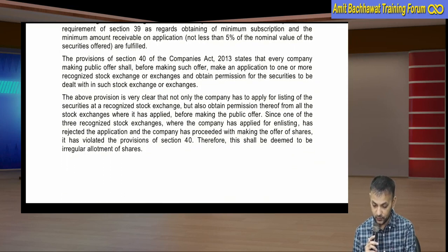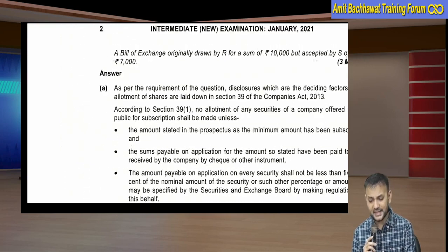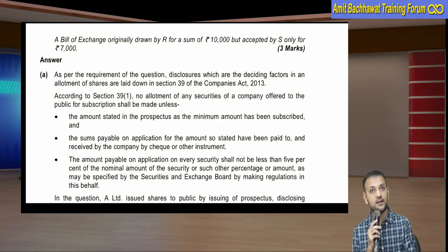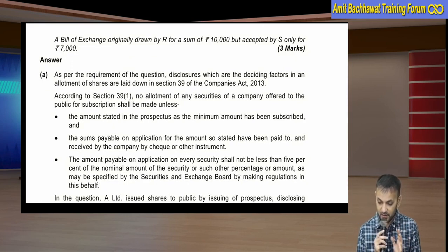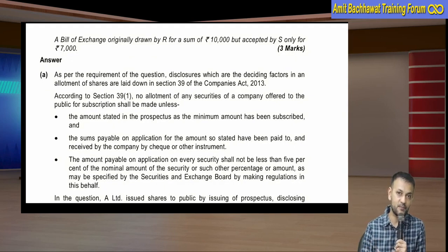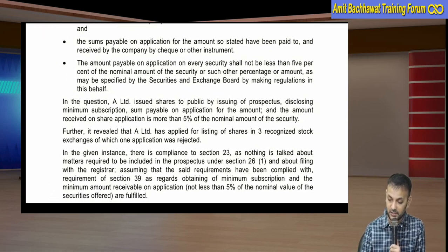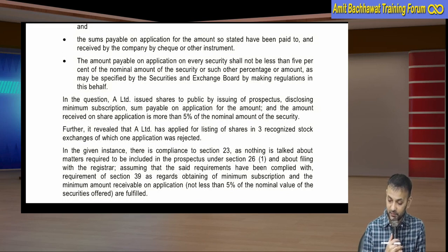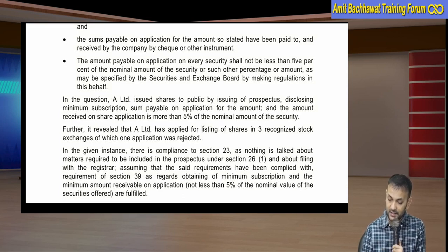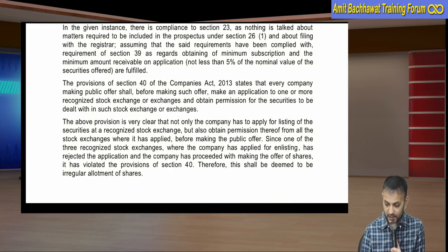First, note that if even one stock exchange refuses listing, you cannot proceed to allot shares - this is very important. Before allotment, minimum subscription must be achieved and application money must have come in. As per Companies Act, the application money must be minimum 5% of the nominal amount, and SEBI specifies such other percentage - which is actually 25% as per SEBI norms.